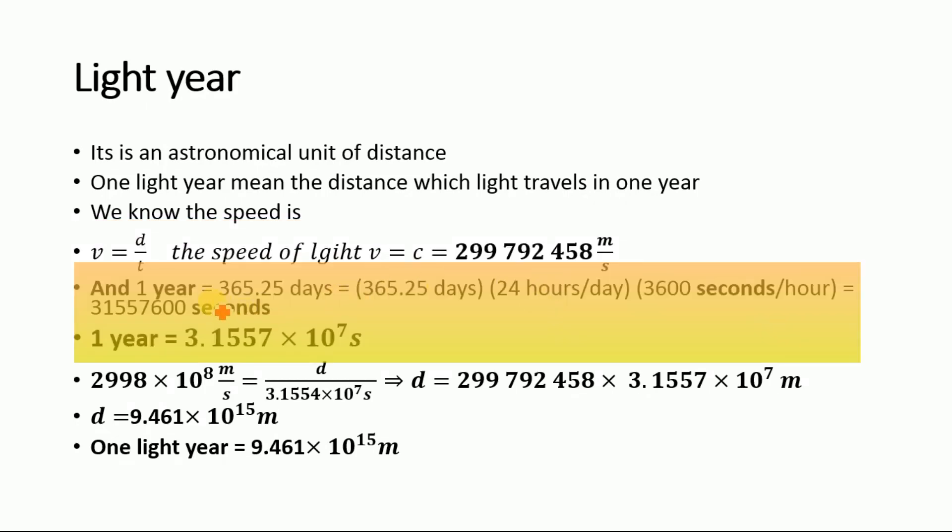And we also know that one year is equal to 365.25 days which is equal to 31,557,600 seconds. So one year in scientific notation is equal to 3.1557 multiplied by 10 to the power 7 seconds.